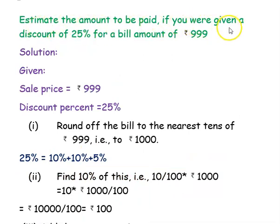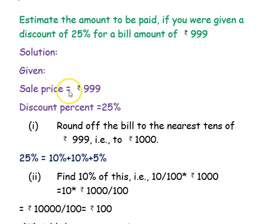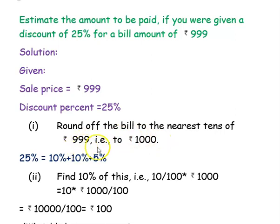The next example: estimate the amount to be paid if you are given a discount of 25 percent for a bill amount of rupees 999. The sale price is rupees 999 and the discount percent is 25 percent. First step: round the bill amount. Rupees 999 rounded to the nearest tens is rupees 1000.